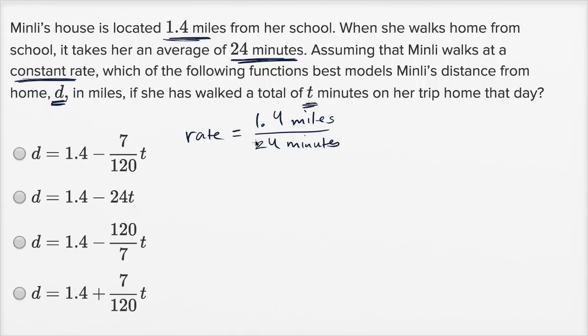This isn't a pretty fraction with the decimal in the numerator, so let's multiply the numerator and the denominator by 10 so that we get rid of this decimal. So that's going to be equal to 14 over 240 miles per minute. And then we can further simplify that. The numerator and the denominator are both divisible by two, so 14 divided by two is seven, 240 divided by two is 120, giving us seven over 120 miles per minute. So we were able to figure out Minley's constant rate.